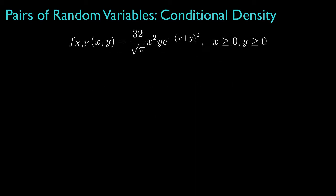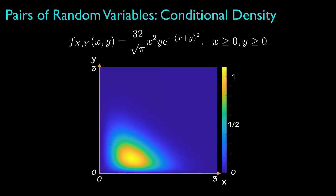As an example, let's look at the density we studied in a previous lesson, which had a range for both variables over the non-negative real numbers. The density looked like this when shown on a two-dimensional false color image. Now let's take a look at some conditional densities for the variable x when we condition on the value that y takes.